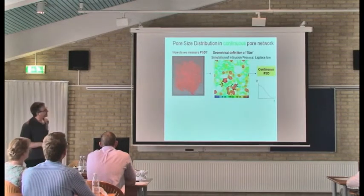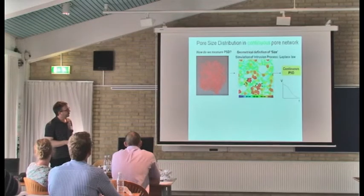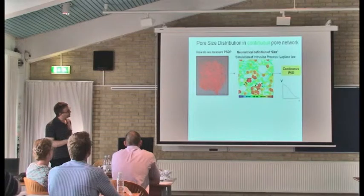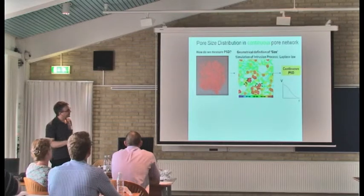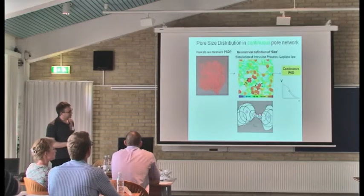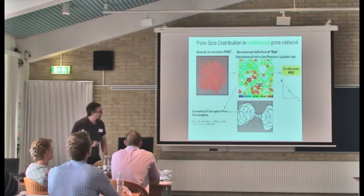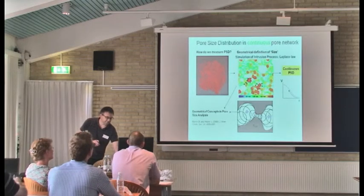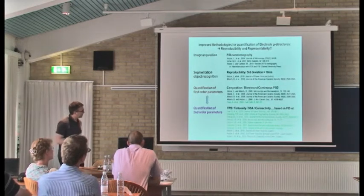The advantage when we have 3D data is we can correct this modeling for the ink bottle effect. We can get the correct continuous PST. This is illustrated here. We look for the maximum sizes in our network, and that's the point where we start the intrusion. We are not intruding from outside like in physical mercury porosimetry. We're starting at local maxima, and then we are coming from both sides. That's the way we describe in this paper how we can get size distribution information from continuous network structure.